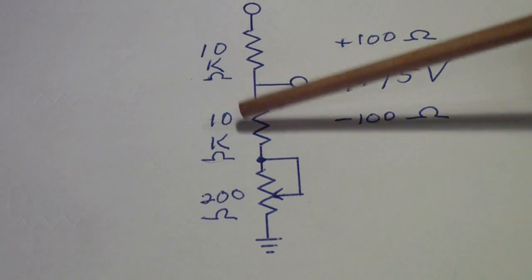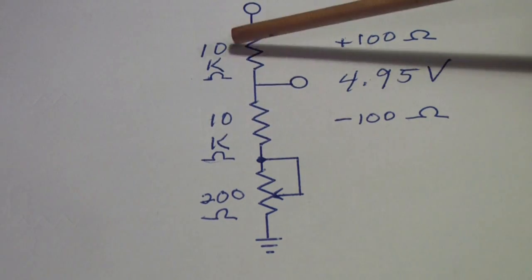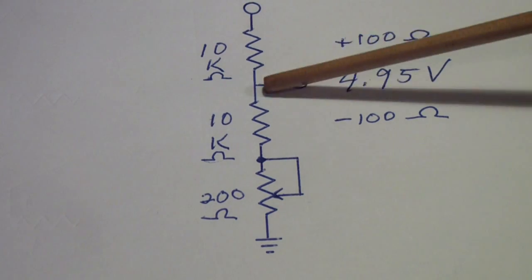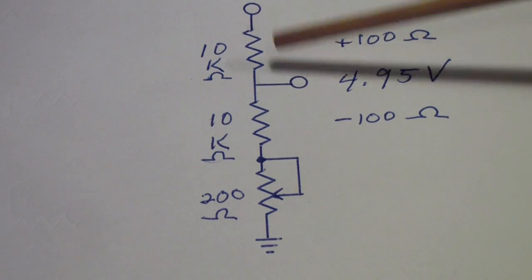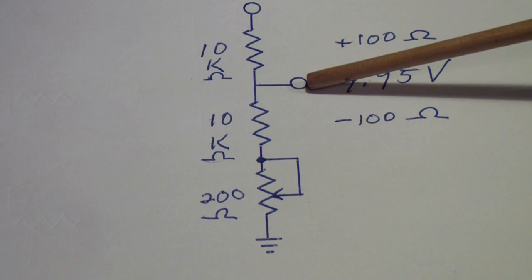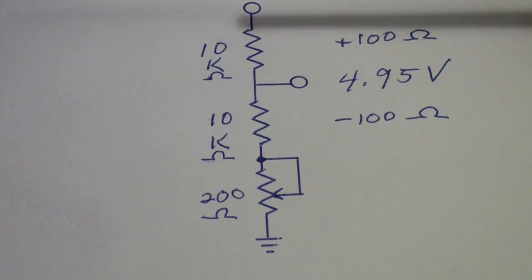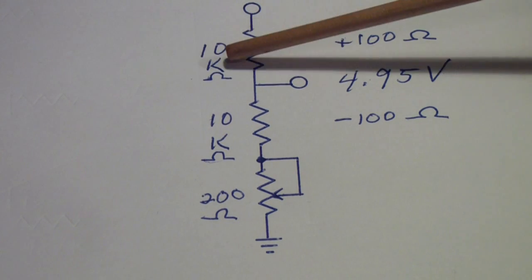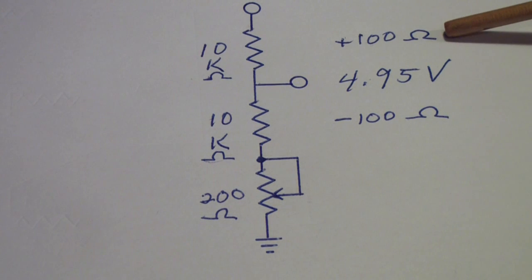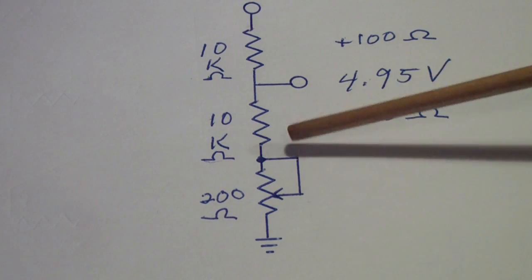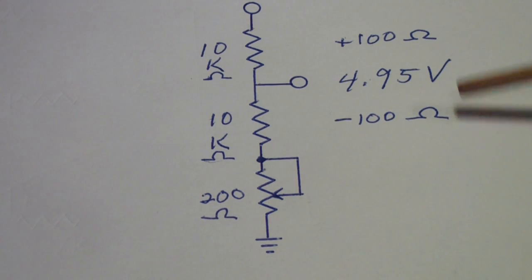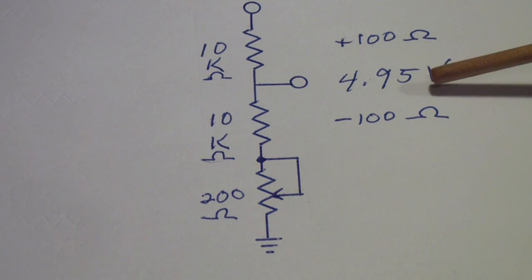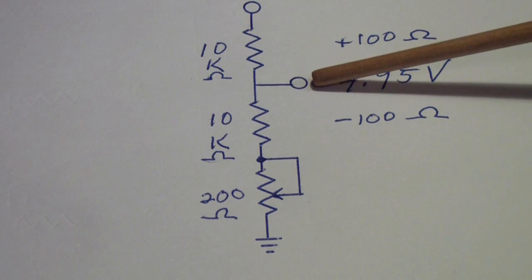And that would divide this signal, 10 volts, exactly in half, producing 5 volts at that point. The problem is that even if you use fairly precision 1% resistors, this resistor can be 100 ohms high, this resistor can be 100 ohms low, and in that case, you're going to get 4.95 volts at this point instead of 5.